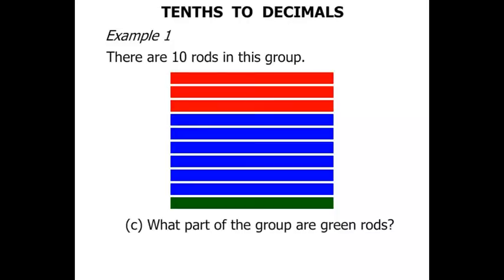What part of the group are green rods? We can see that we've only got one of those. We've got 1 out of 10. As a fraction that's 1 tenth. And as a decimal 0.1.